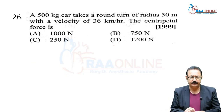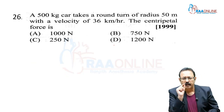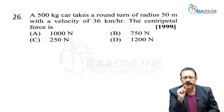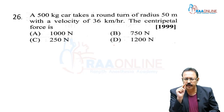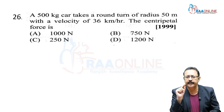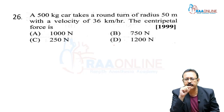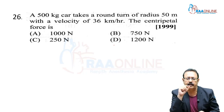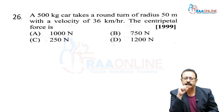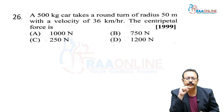Problem 26: A 500 kg car takes a round turn of radius 50 m with a velocity of 36 km/h. The centripetal force is?